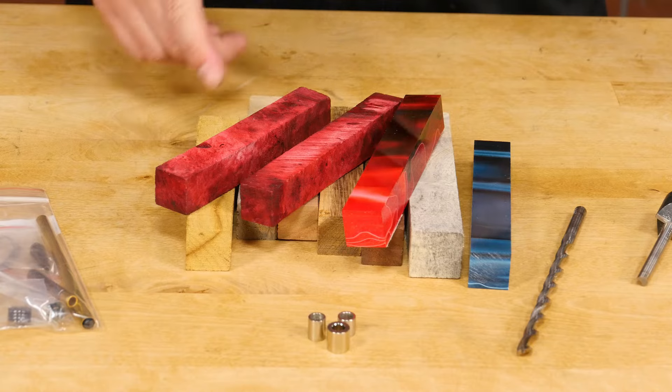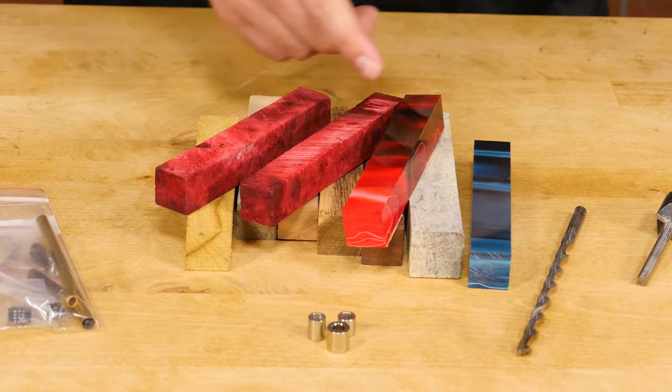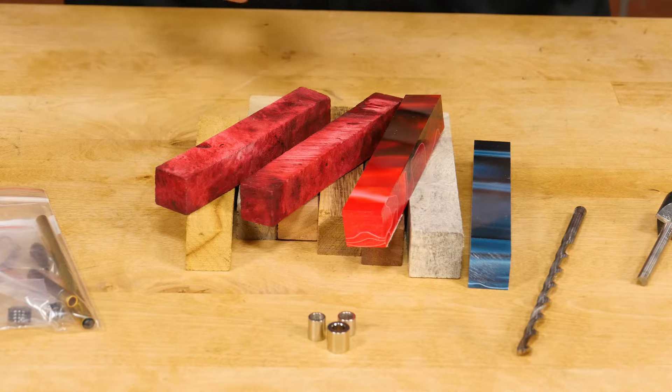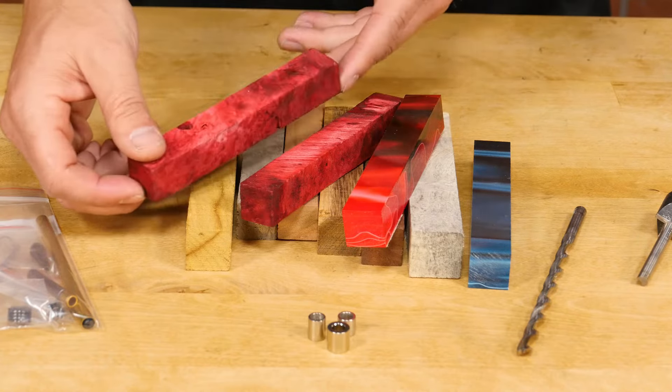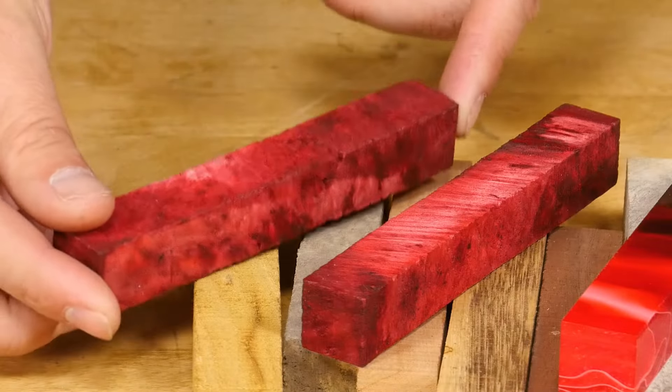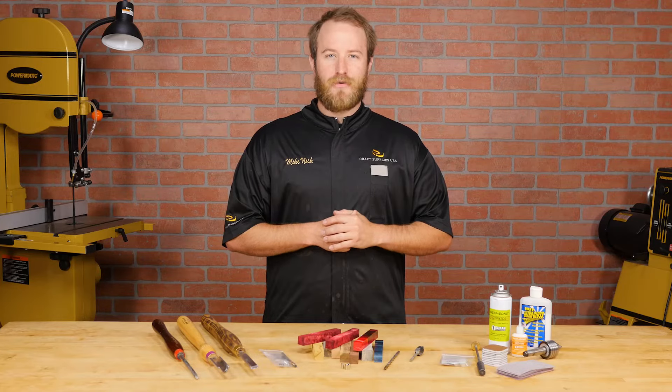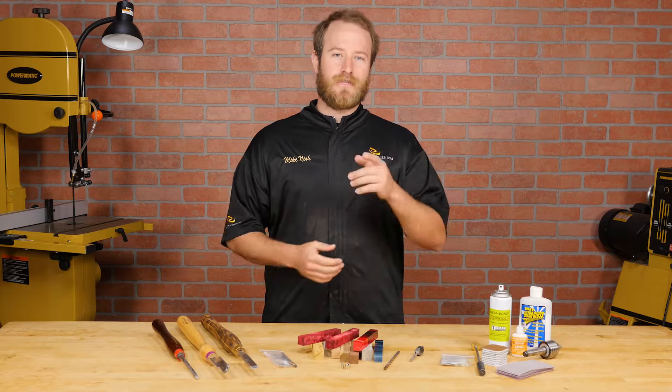When turning pens, I prefer to use dense hardwoods, stabilized woods, or acrylic blanks. Pens get handled a lot and soft woods will show dents and scratches easily, so I'm going to be using a stabilized Box Elder burl pen blank. As a resource for this video, we'll include links to all the products we've used in the description below.